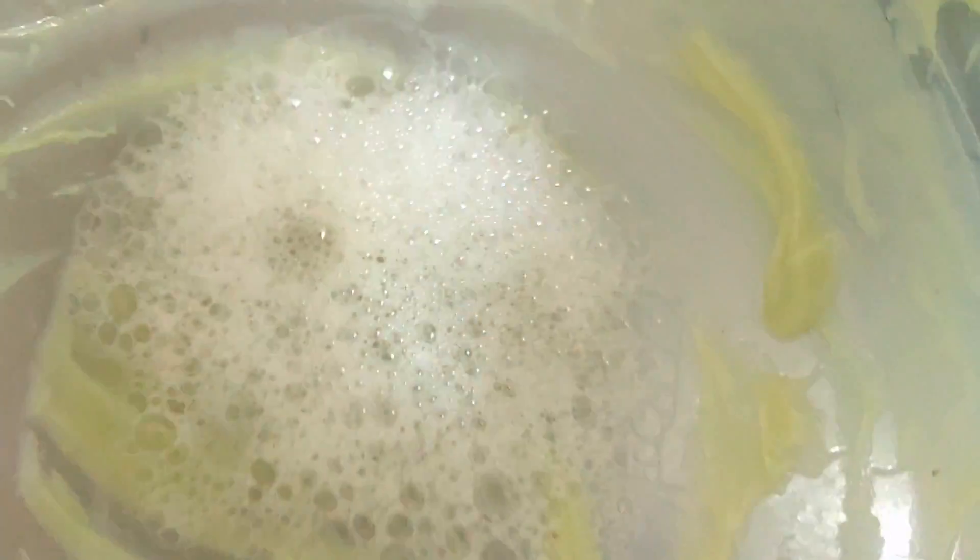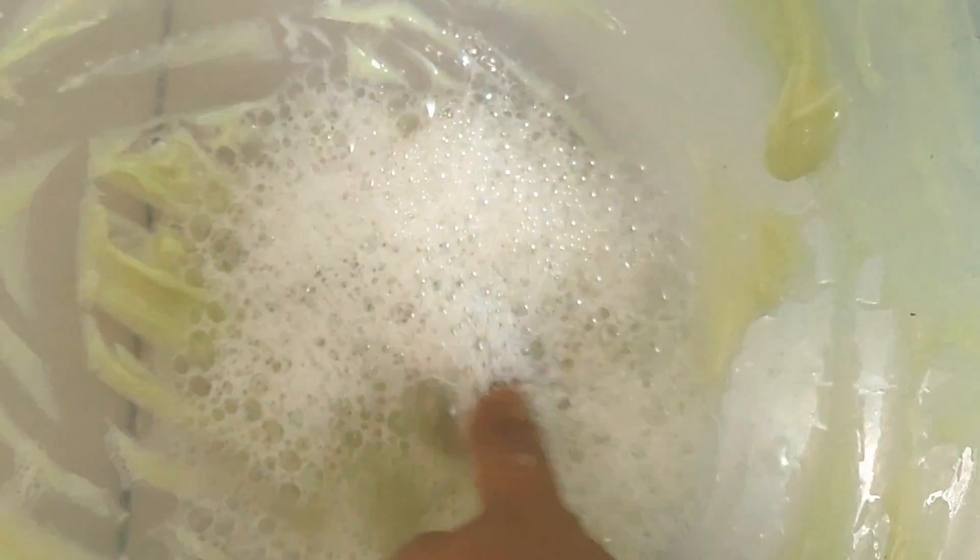It usually takes about 24 to 48 hours for your lye to neutralize in your soap, so it's not recommended that you touch your soap with your bare hands until the lye has neutralized. You need to wait 24 to 48 hours before you can touch your soap with your bare hands. Before then if you want to touch your soap, maybe to feel how hard it is, you need to wear some gloves and make sure you're well protected. After 24 to 48 hours your soap should be well saponified - that is the caustic soda, the water, the oils should all be well mixed enough to have already formed the soap that leaves no more lye in your soap.